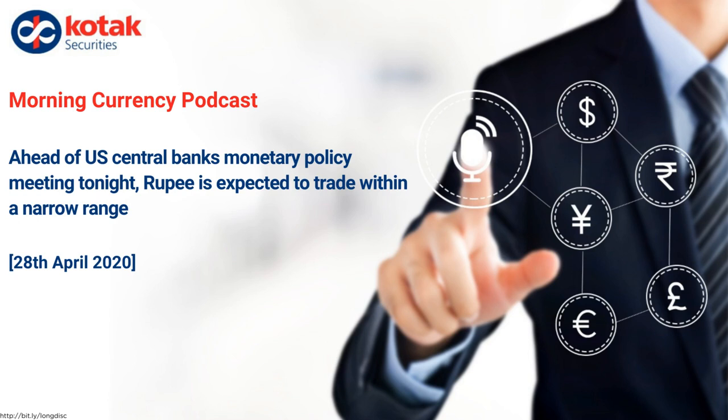But in case the Fed does not give any such hint of an exit from its easy money policy, and continues to say that they are not yet fully impressed with the current pace of U.S. economic recovery and that the easy money policy should continue for an extended period of time, then we can see dollar rupee come down and test the support levels of 74.65, which is an important zone on the May futures.